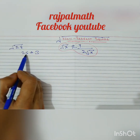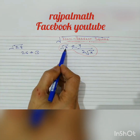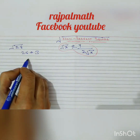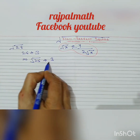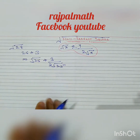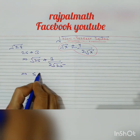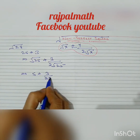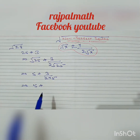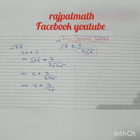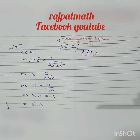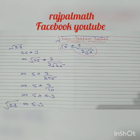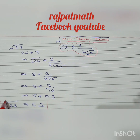Since 25 is a perfect square, applying the formula gives under root of (25 + 3) = under root 25 plus 3 over (2 times under root 25), which implies 5 plus 3 divided by (2 times 5), that is 5 plus 3 by 10, giving us 5 plus 0.3.